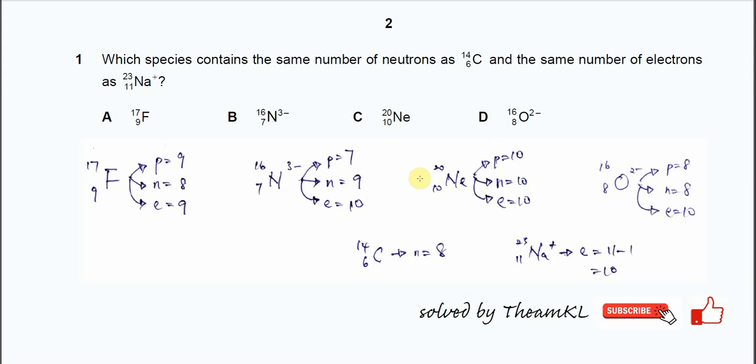Question 1. Which species contains the same number of neutrons as carbon-14 and the same number of electrons as sodium ion? Okay, so first you need to identify the number of neutrons in the carbon-14.